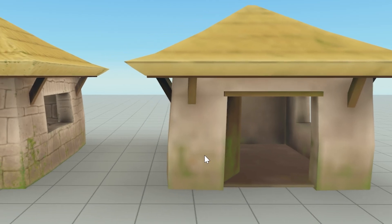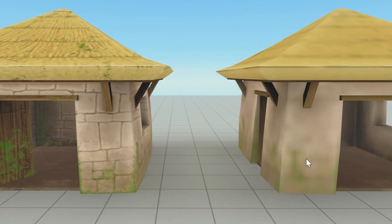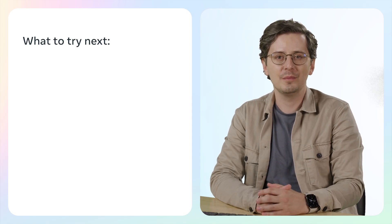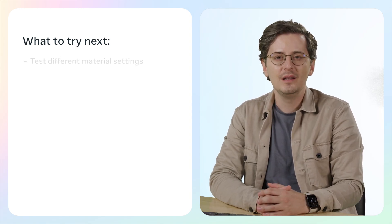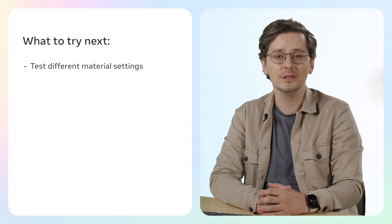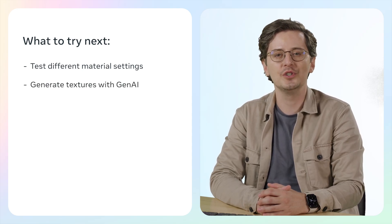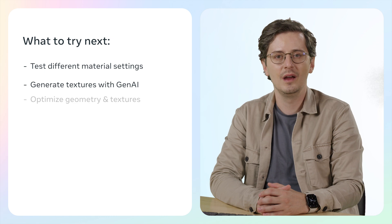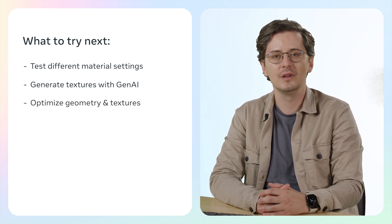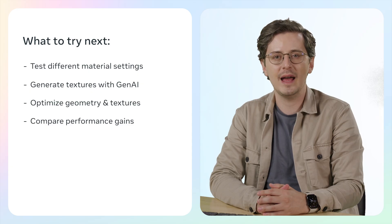Remember, finding the right balance between visual quality and performance may require some trial and error. So put your newfound knowledge into practice with these next steps: test different material settings to find the perfect texture for your world; explore the Gen AI tool to generate unique textures and apply them to objects in your worlds; optimize your textured models by reducing polygon count and texture resolution and compare performance before and after optimization. Until the next video, keep experimenting and keep creating. I can't wait to see what you'll create.